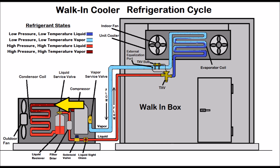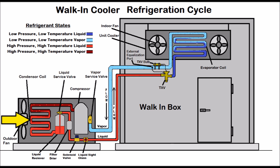The refrigerant rides the discharge line until it goes into the condenser coil where it's rejecting heat to the outside air. It starts rejecting enough heat until it turns into the saturated state — that's where liquid and vapor both exist at the same time. That's shown by the dark red and light red colors in the condenser coil. That saturated state is where most of the heat is being rejected.